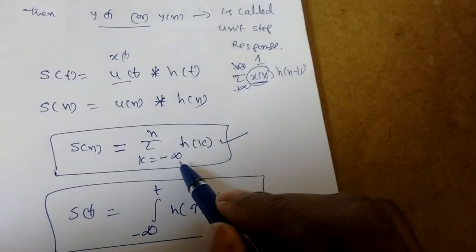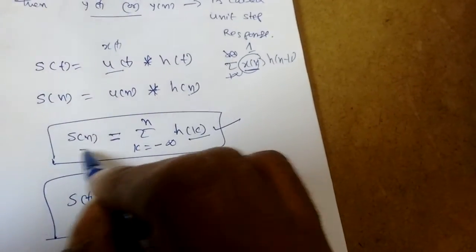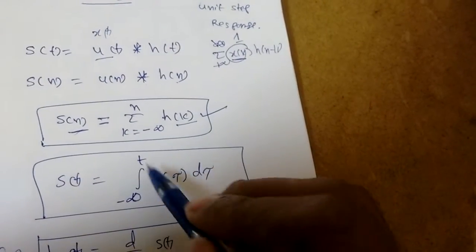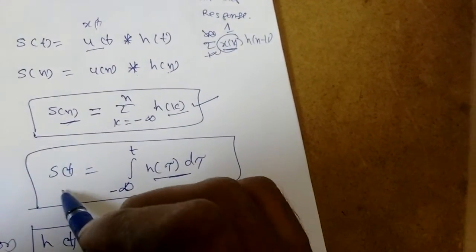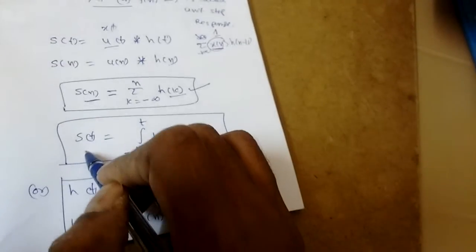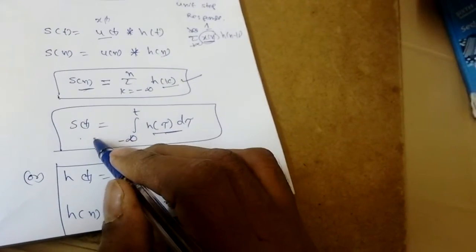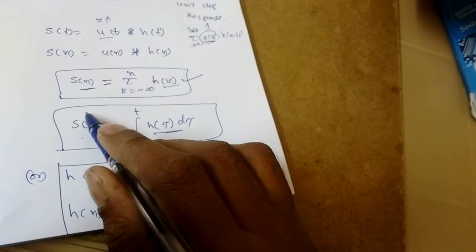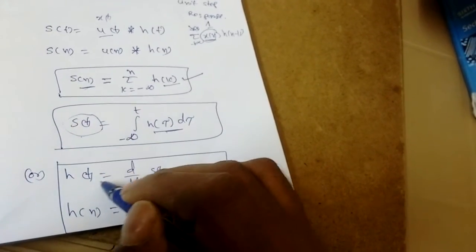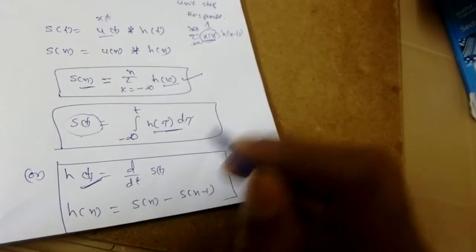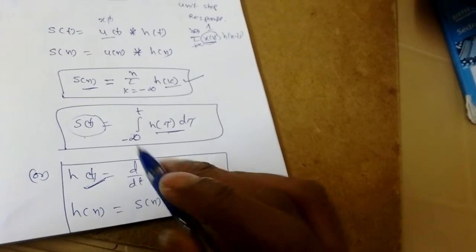The summation of the impulse response is nothing but unit step response. Or integration of impulse response is nothing but unit step response. We can say integration of impulse response is step response, or we can say differentiation of step response gives impulse response.